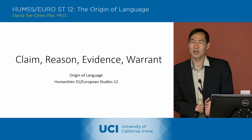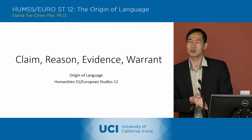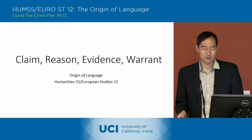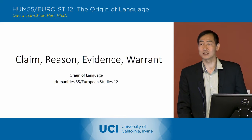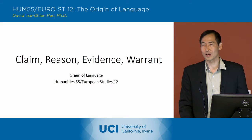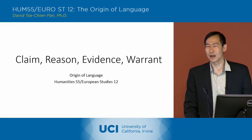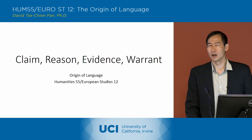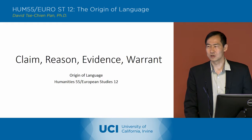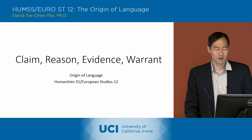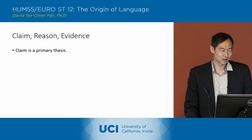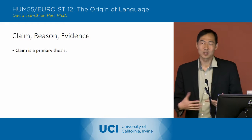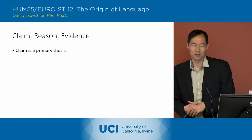Claim, Reason, Evidence, Warrant. So you read that section in the Craft of Research, and I'm basically going to go over that section and relate it to the Hobbes. So let's start — we'll start easy. Claim, Reason, and Evidence.